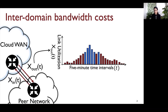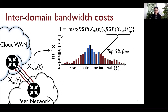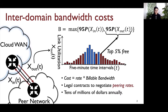In the industry-standard billing scheme on the internet, the top 5% utilizations in a given month are free. So the amount that this link is billed at — its billable bandwidth — is the maximum of the inbound or outbound 95th percentile utilization. The money that exchanges hands in this billing scheme is the product of the billable bandwidth and the peering rate of the link.